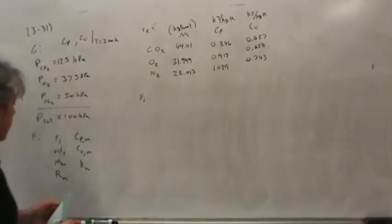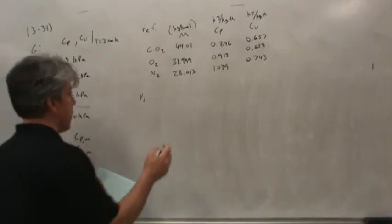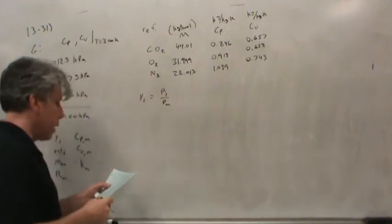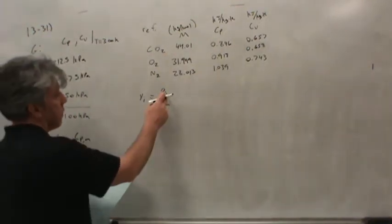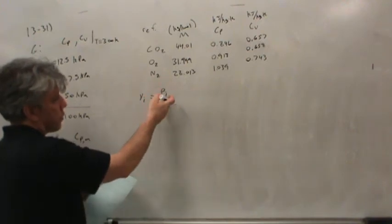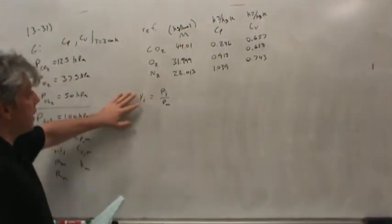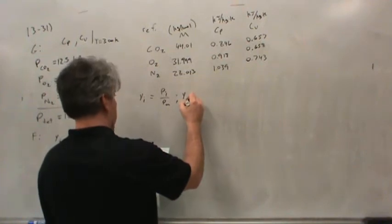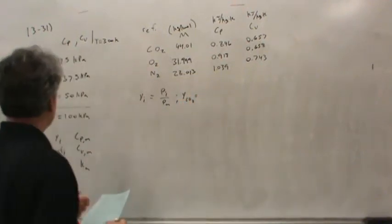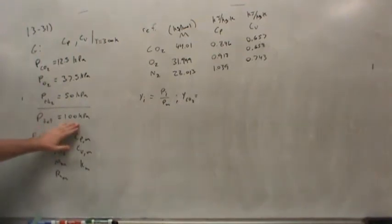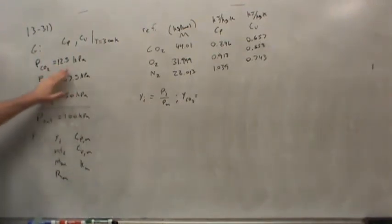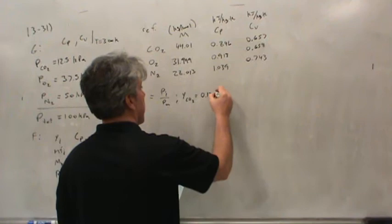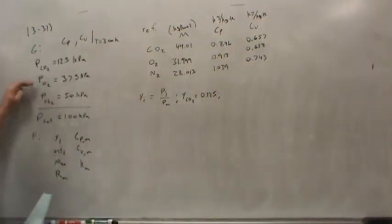To calculate the mole fractions Y_i, this is pretty easy because the partial pressure ratio of each gas divided by the total pressure gives the mole fraction. So the mole fraction for carbon dioxide is 12.5 kPa over 100 kPa, which is 0.125. The mole fraction for oxygen is 37.5 over 100, so 0.375.